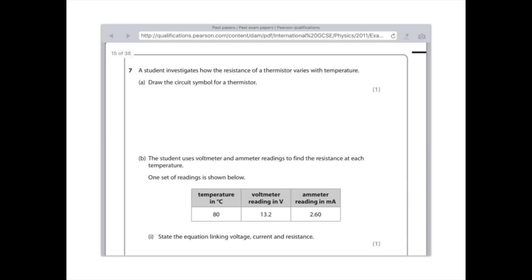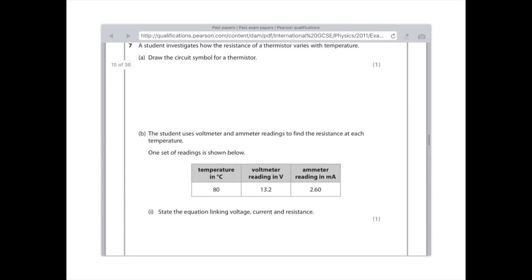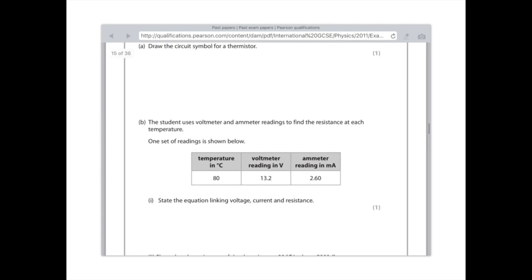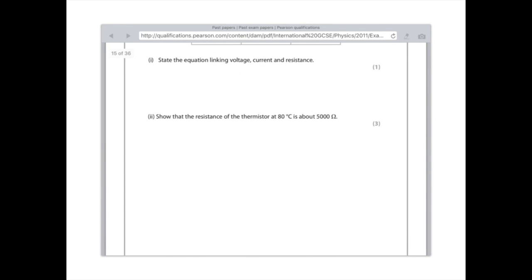Remember, the unit of power is watts. Question 7a: a student investigates how the resistance of a thermistor varies with temperature. Draw the circuit symbol for a thermistor. That's the one which looks like a hockey stick, so you want to do a resistor and then like a hockey stick going through it. Part b: the student uses voltmeter and ammeter readings to find the resistance at each temperature. One set of readings is shown below. State the equation linking voltage, current, and resistance. I'm going to put my formula triangle, and therefore voltage is given by current times resistance (V = IR).